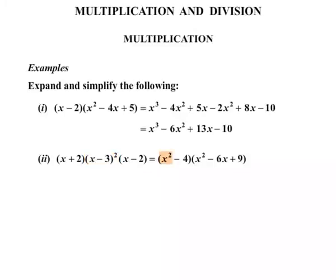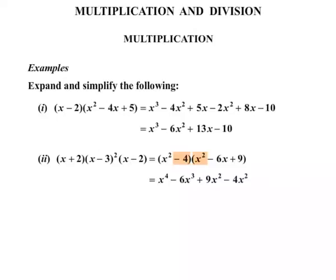Similar to before, x squared multiplies by each of those terms. So x squared times x squared is x to the 4. x squared times minus 6x is minus 6x cubed. x squared times 9 is plus 9x squared. Moving on to the minus 4 now, multiplying by each of those terms: minus 4 times x squared, minus 4 times minus 6x, and finally minus 4 times 9 gives minus 36.